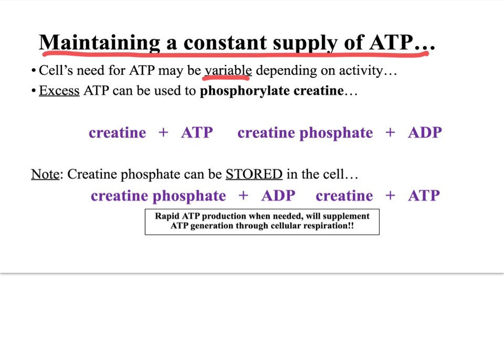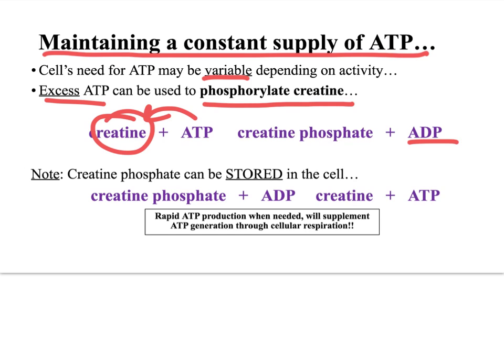If you have extra ATP, remember ATP is not a particularly stable molecule, so you don't want it to break apart if you don't need it. If you have excess ATP, you want to be able to store it. One way is by phosphorylating something called creatine. Creatine can be phosphorylated by ATP, which forms ADP and creatine phosphate.